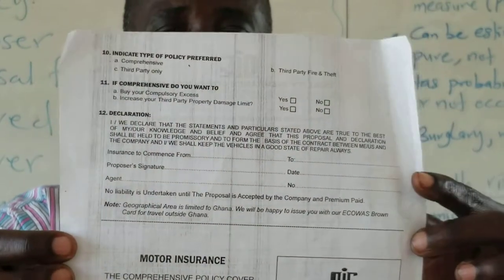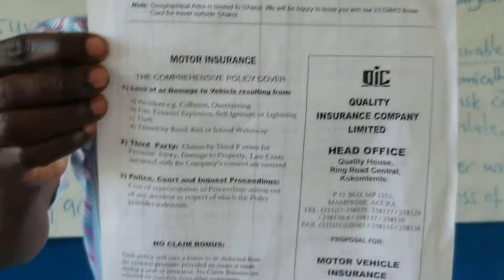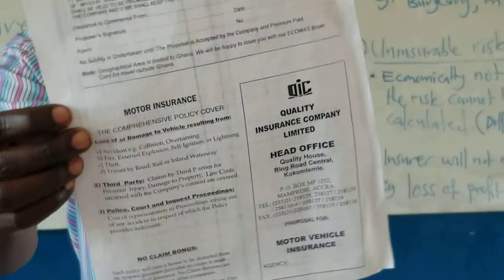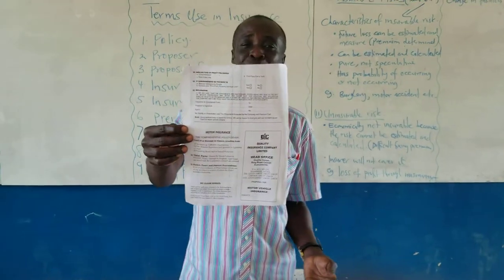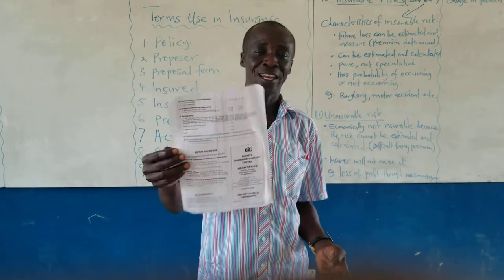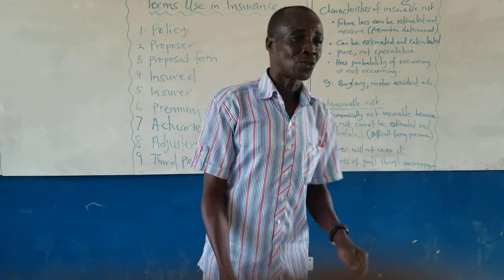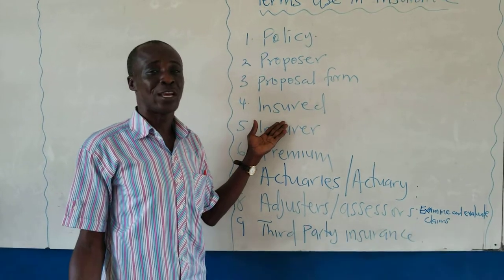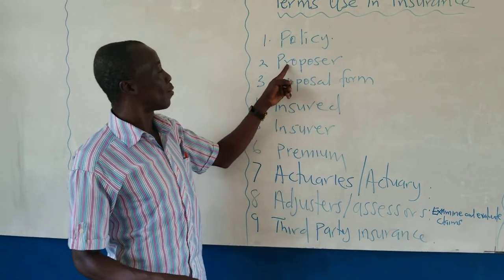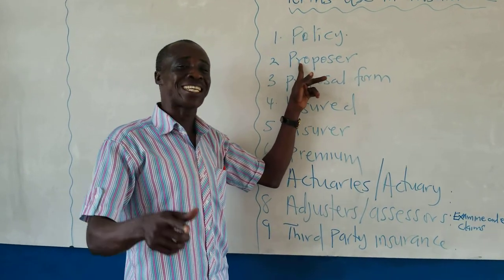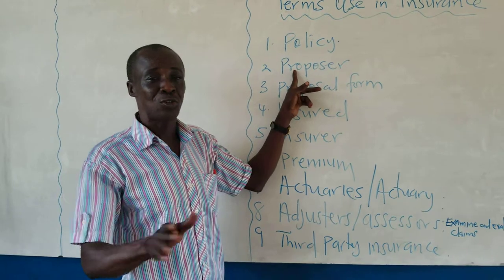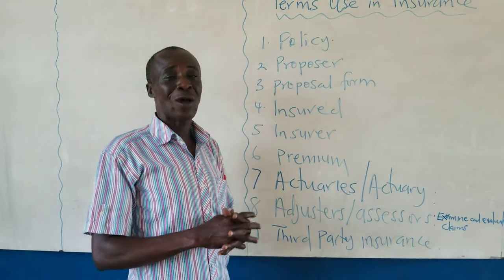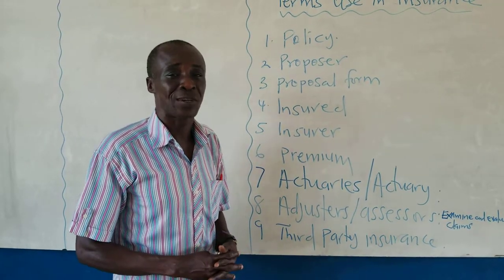This is the back view. You can walk into any insurance company to see how a proposal form looks — they will give it to you. That is from Quality Insurance Company Limited. Now regarding the insured: when you are seeking to be insured you have not yet been insured — you are in the process, so you are the proposer. Once you are through with the process, you become the insured, and the insurance company is the insurer.